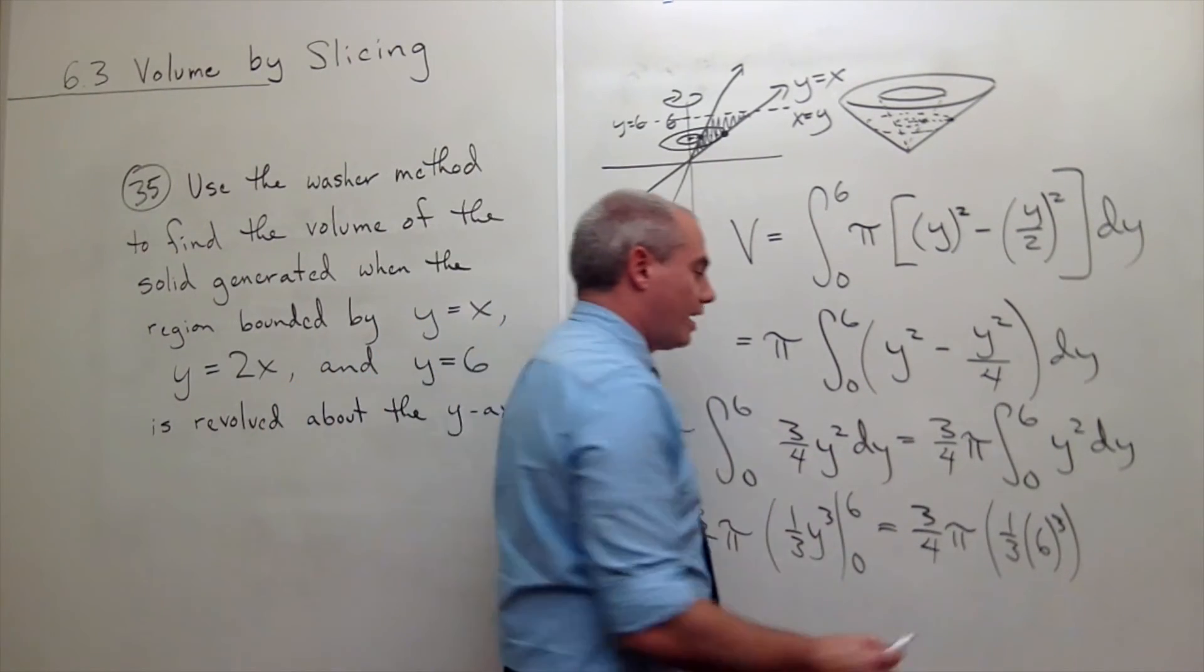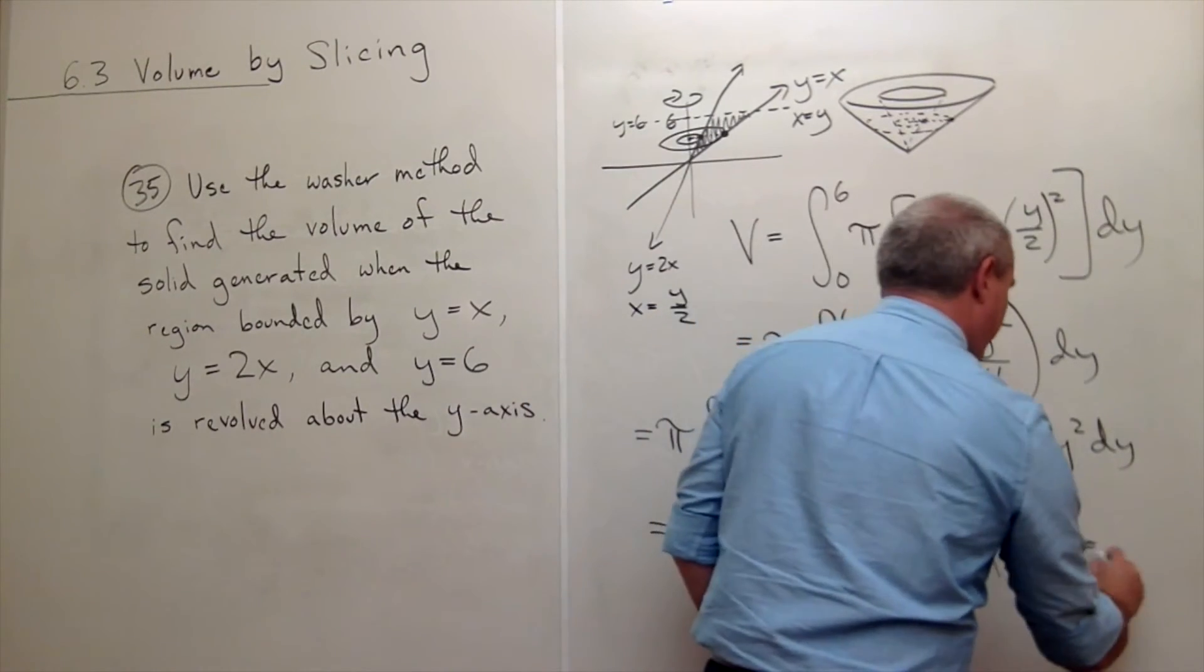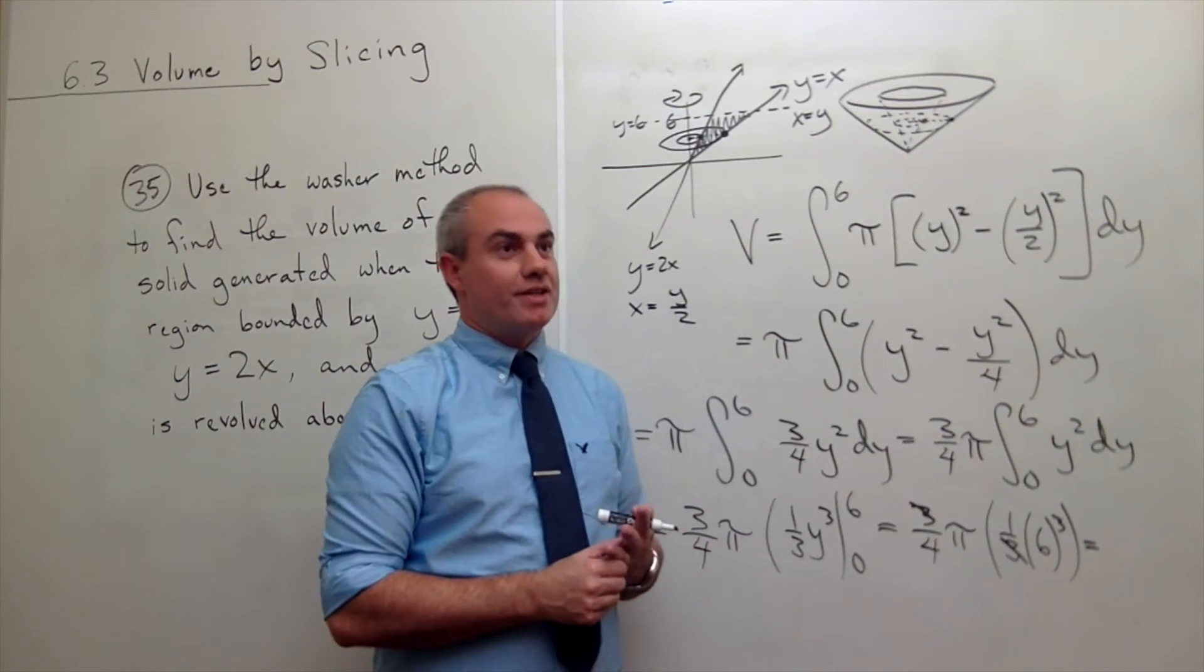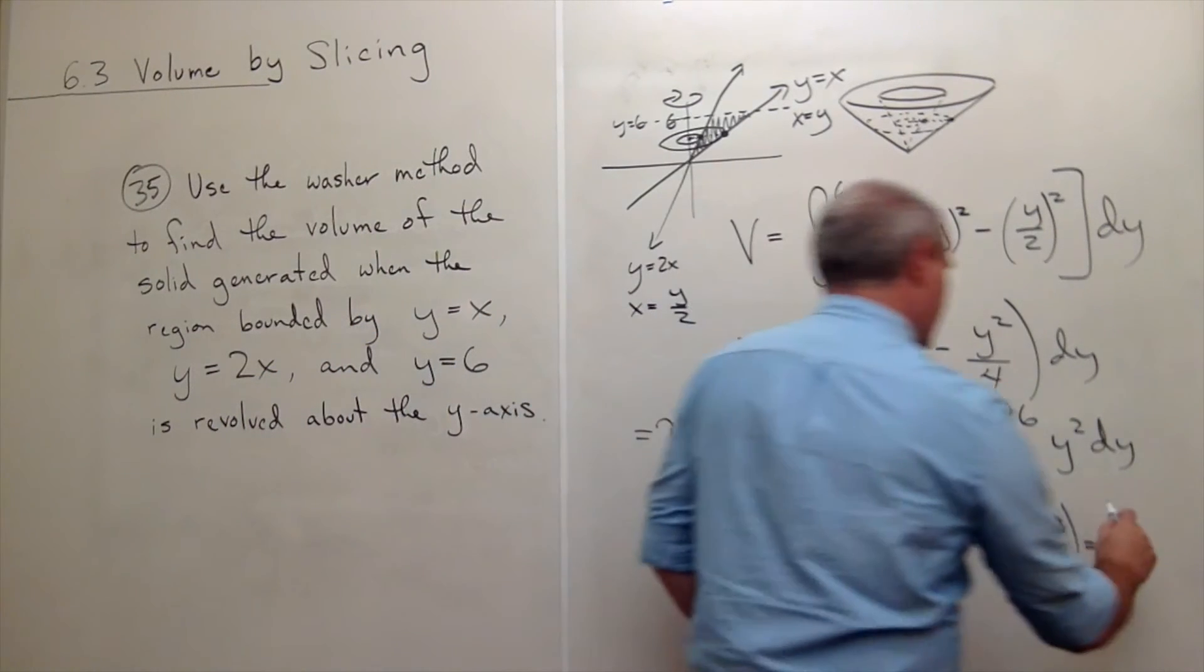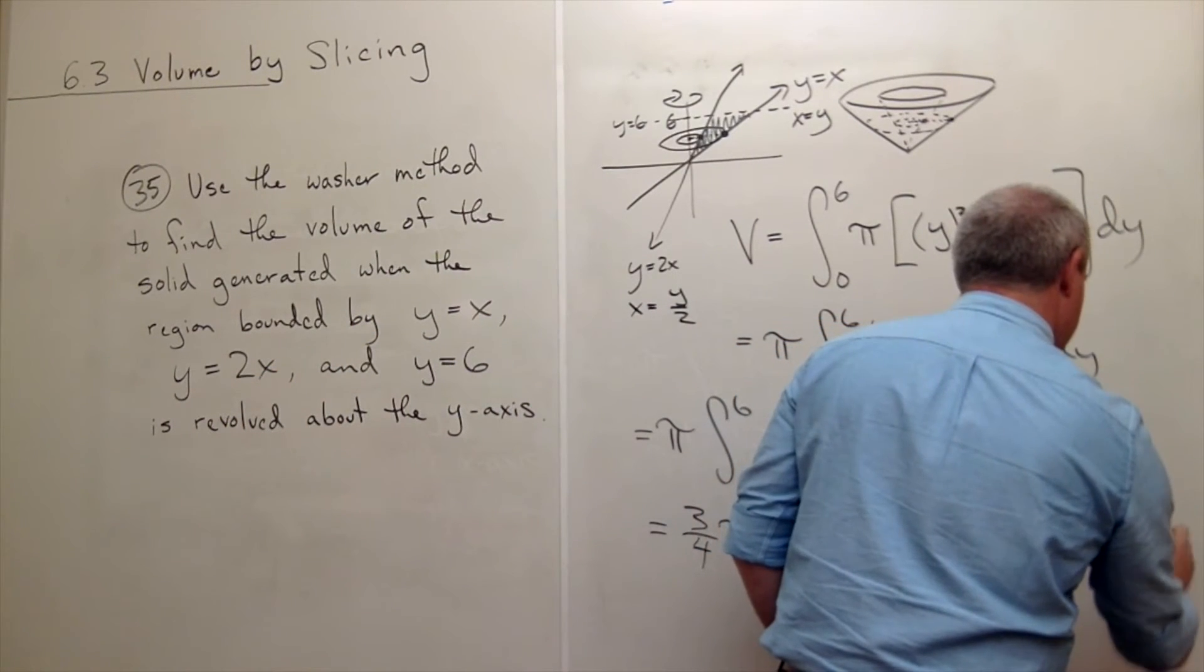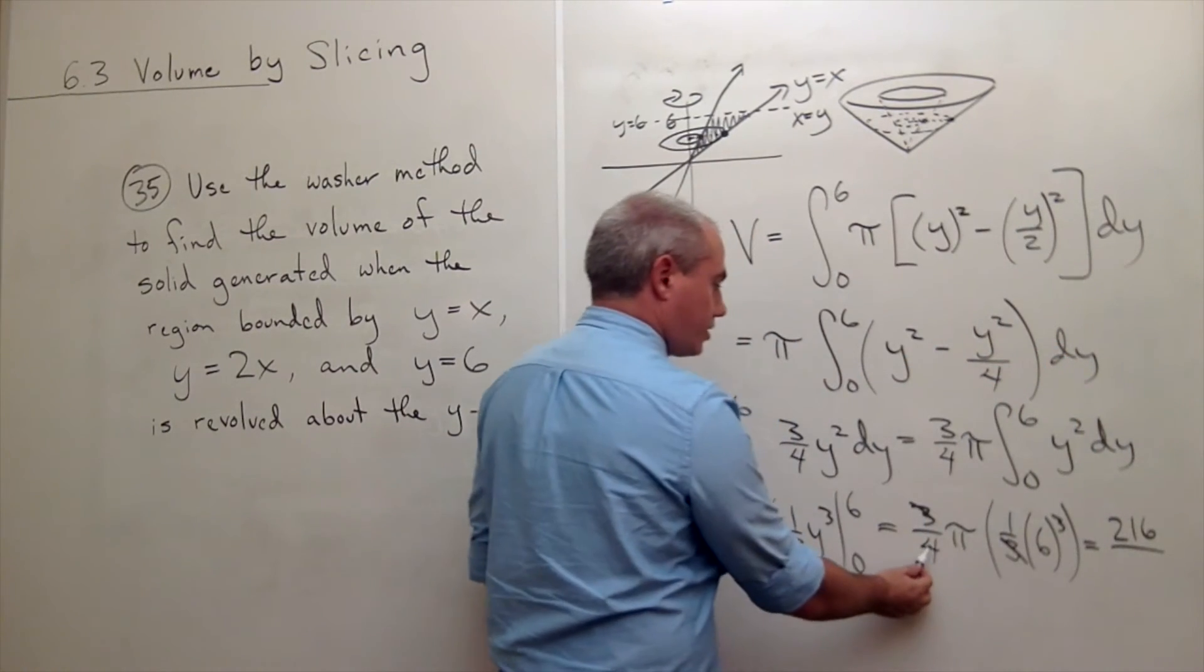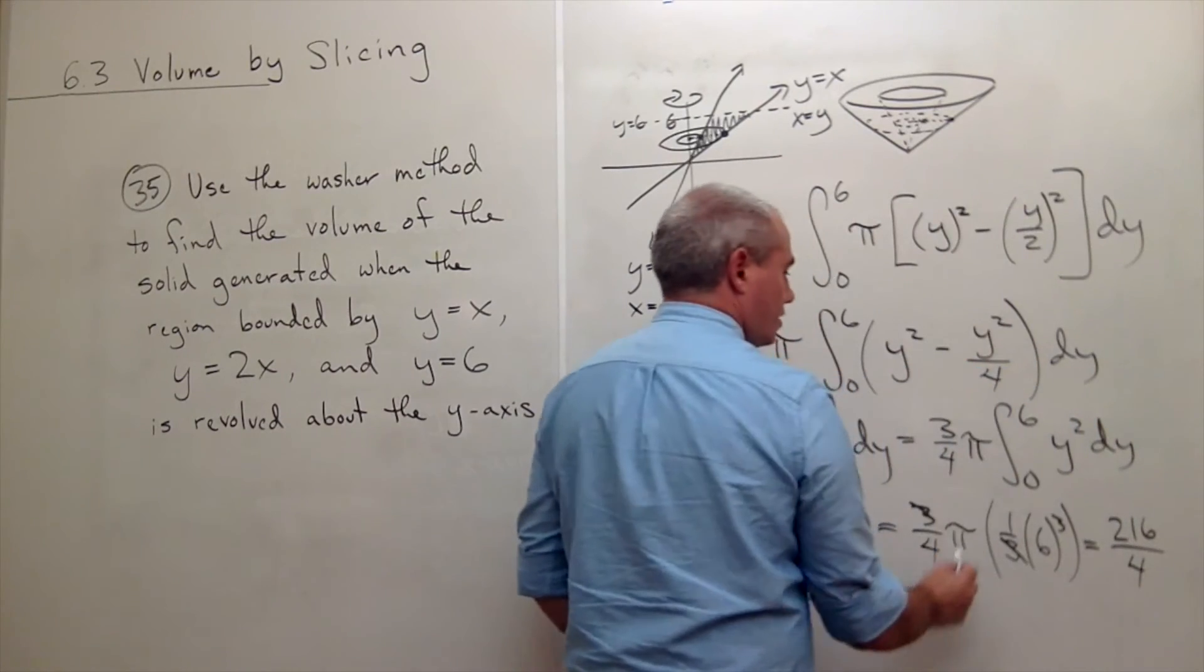So this is my answer. I see that some 3's cancel. And I'm left with 6 cubed. Let's see. That's 6 times 36, which is 180, 216. Is that correct? 216 over looks like 4 times pi.